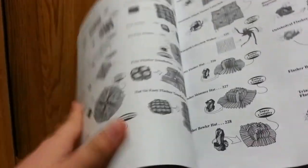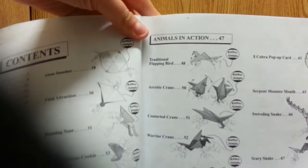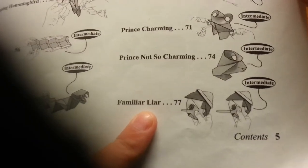And we found the Origami Animals category. The animals, whoa, sorry about that. The animals in action. And then right here, Familiar Liar, page 77.